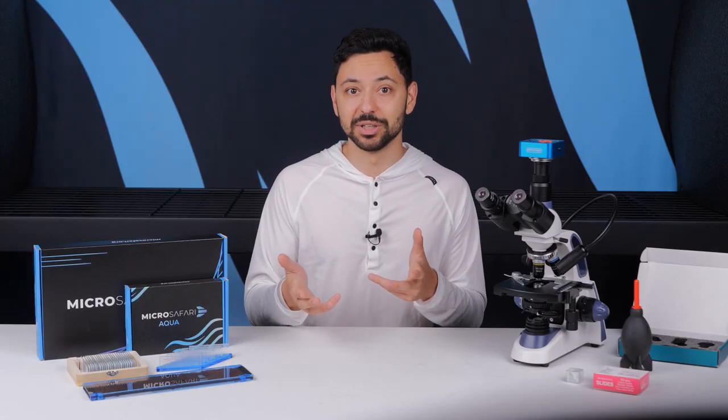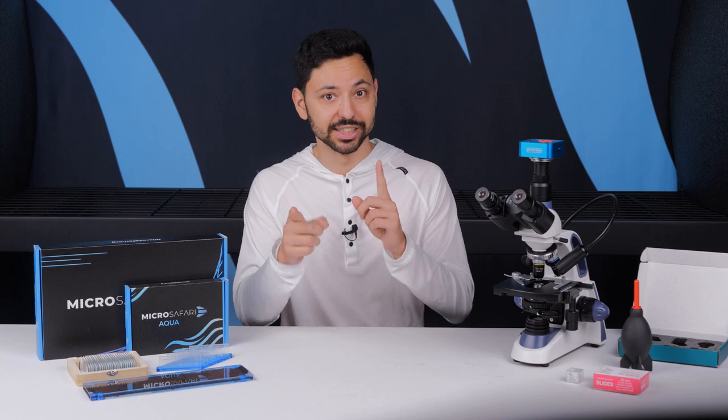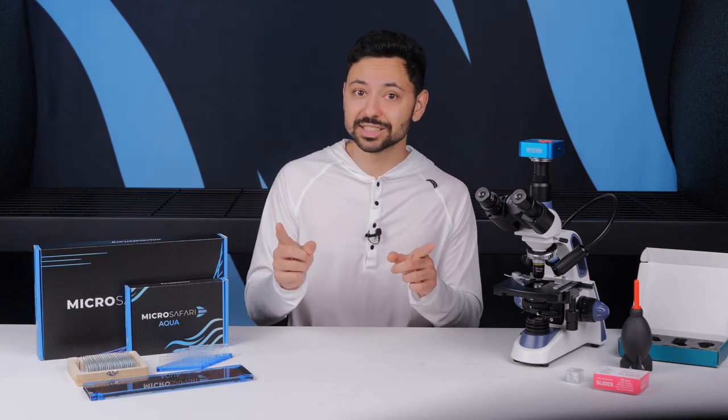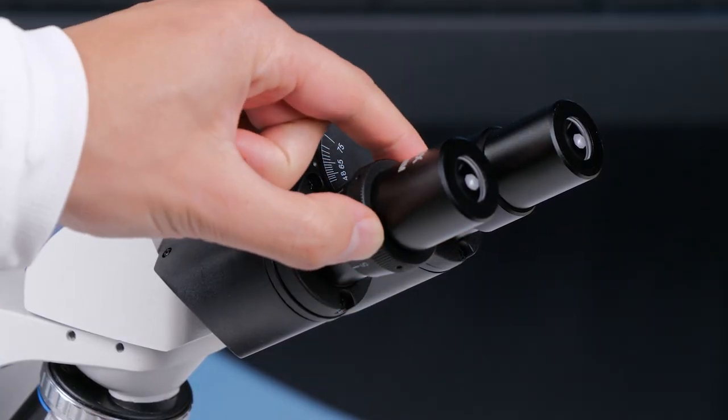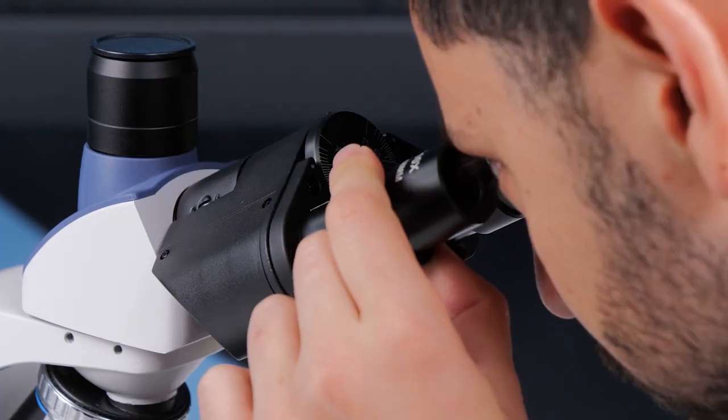If, when you look into the microscope eyepiece with each eye individually, one is in focus and the other isn't, you'll want to adjust the diopter to bring both eyes into focus simultaneously.